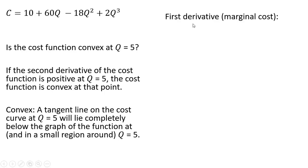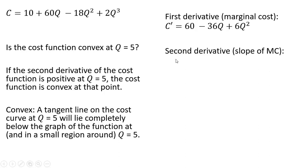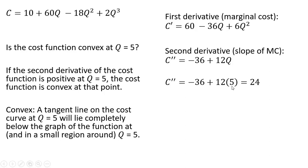We once again use the first derivative as shown, and the second derivative equals minus 36 plus 12q. Plugging 5 in for q, we see the second derivative is positive: minus 36 plus 60 equals 24. So the cost curve is convex at q equals 5, since the second derivative is positive.